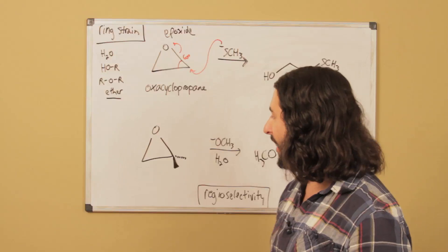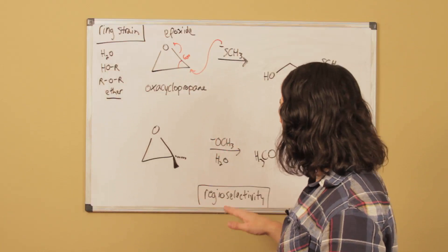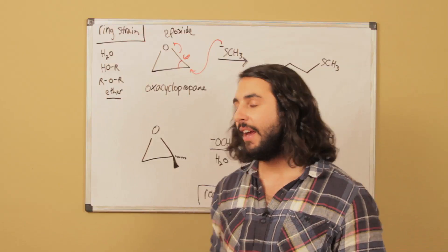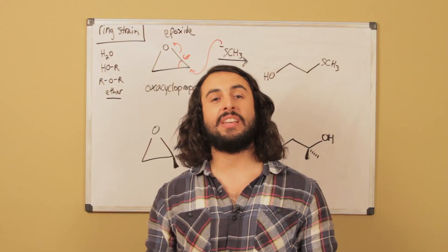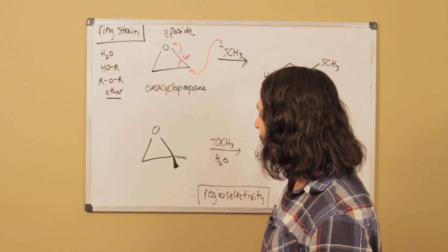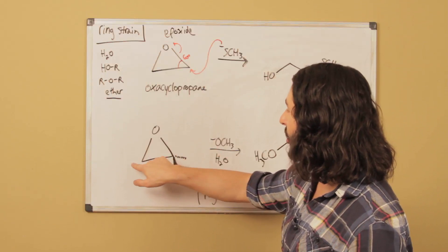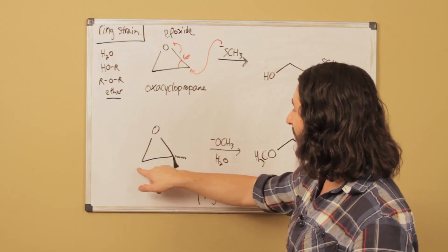It's the ring strain that's driving this. The other thing we want to understand is that there is a high degree of regioselectivity in terms of which carbon a nucleophile is going to attack, and the reason for this is sterics. Let's say we have another SN2 nucleophile that wants to do something here. Now it's got a choice of which carbon it's going to attack.